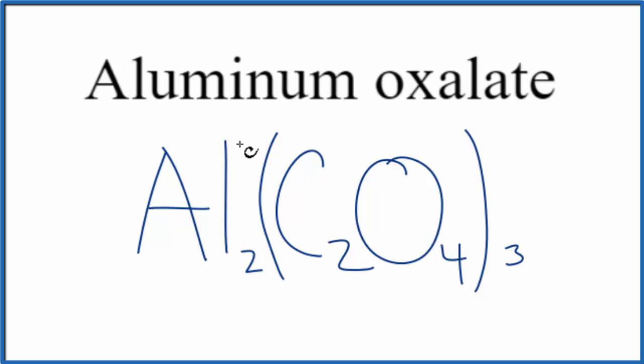Let's check our work. Aluminum is three plus, and each oxalate ion is two minus. Three oxalate ions times two minus gives six minus. Two aluminum ions times three plus gives six plus. Six plus and six minus adds up to zero, so this is the correct formula for aluminum oxalate.